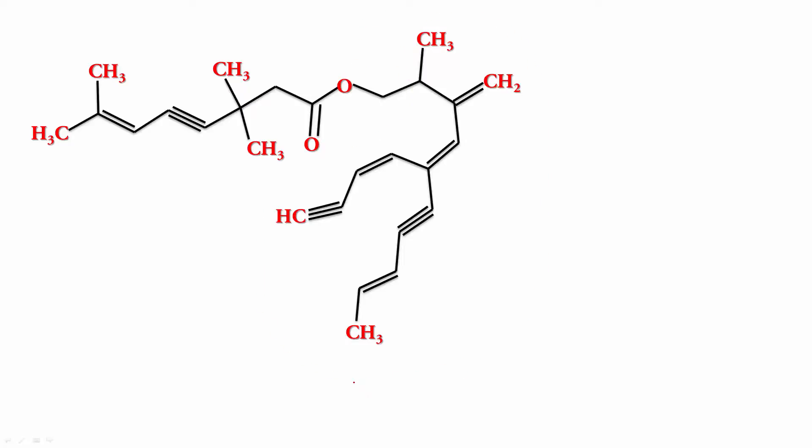So let's figure out what is the parent here. Now when you have to number this, this has to be the one. So this is one. So you have to start numbering from here. So the parent chain should be first of all the one which has maximum number of multiple bonds.